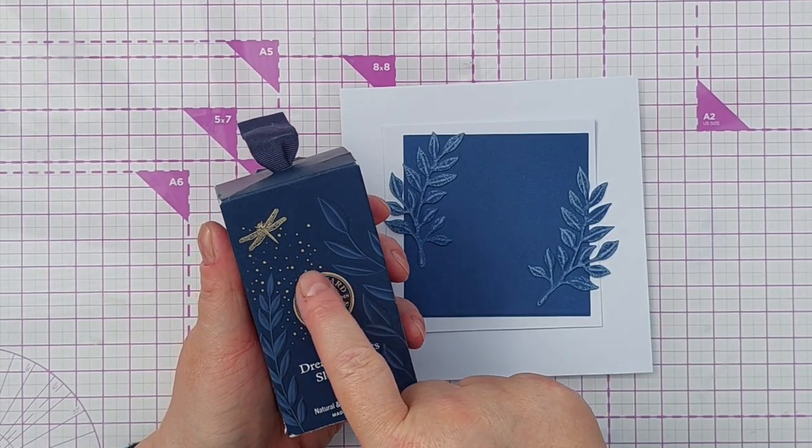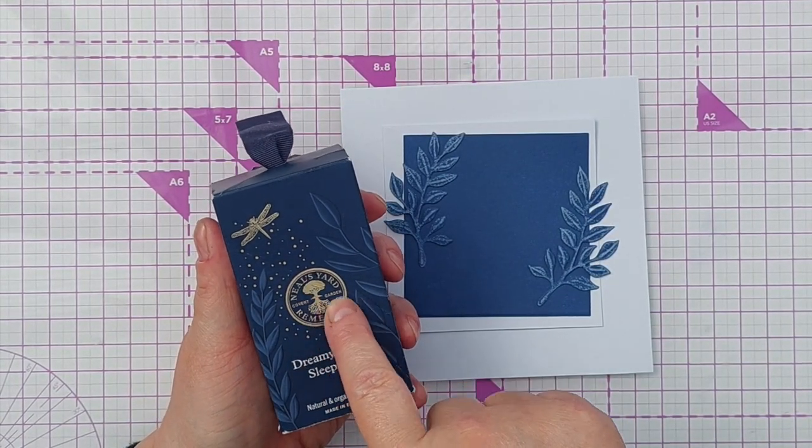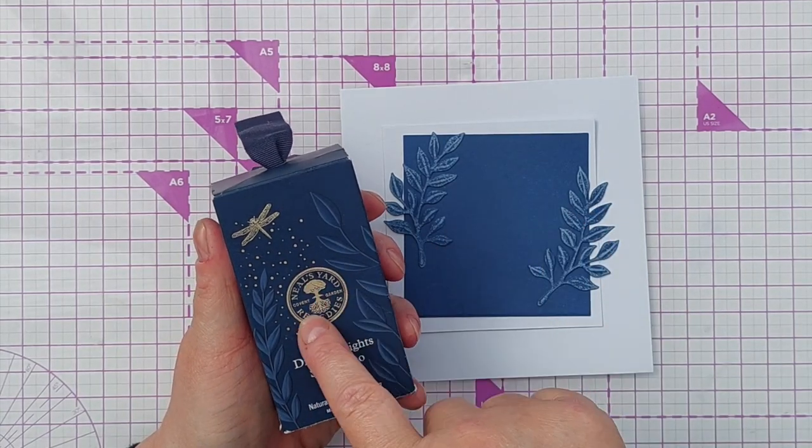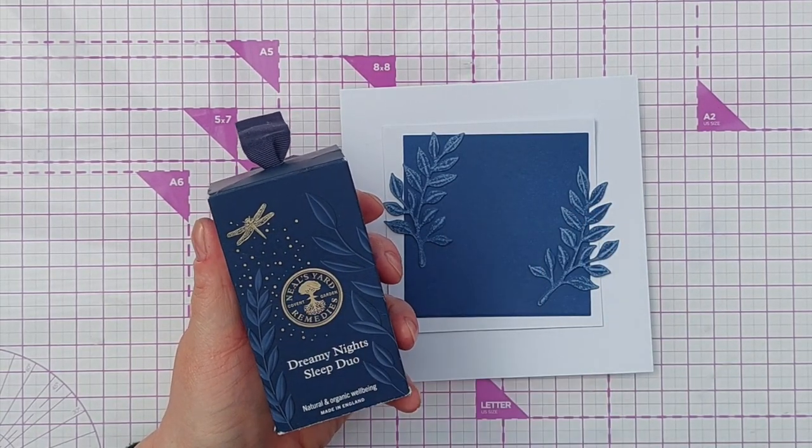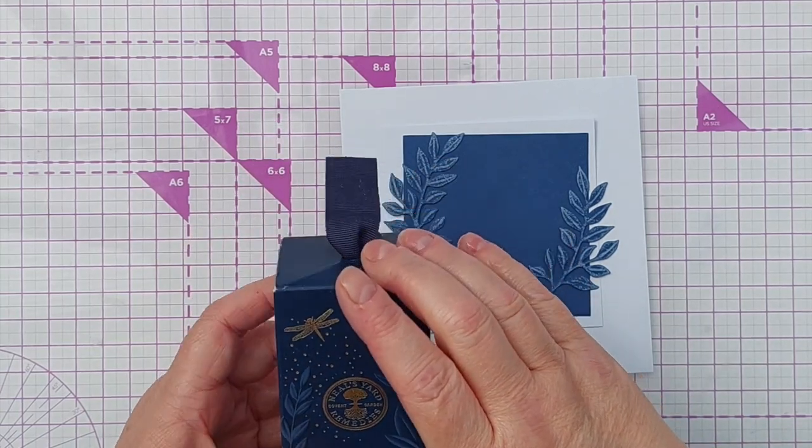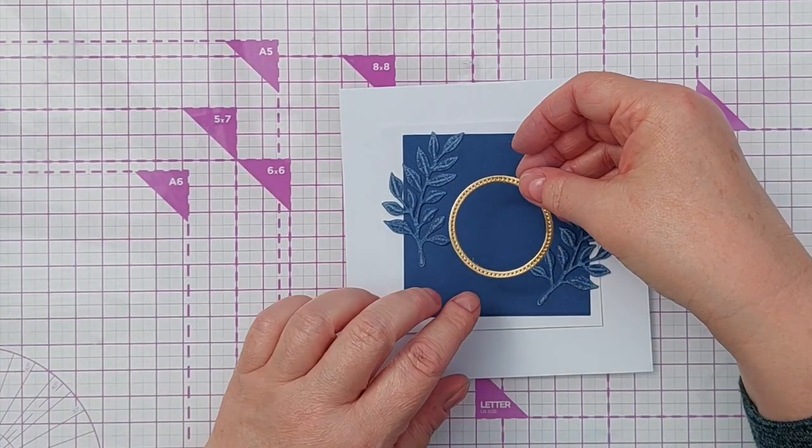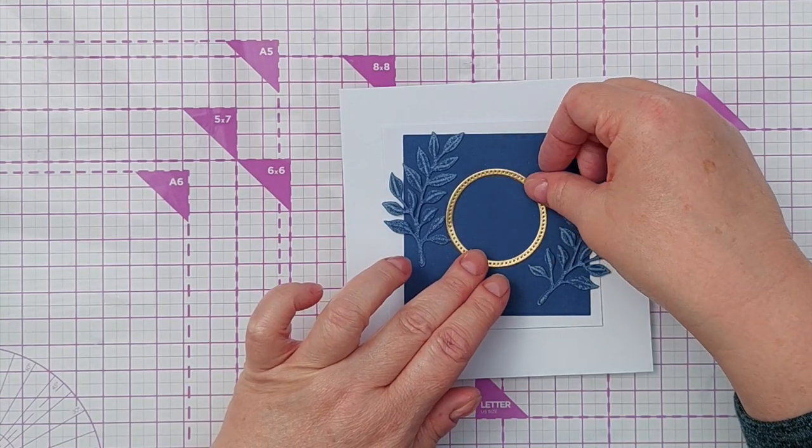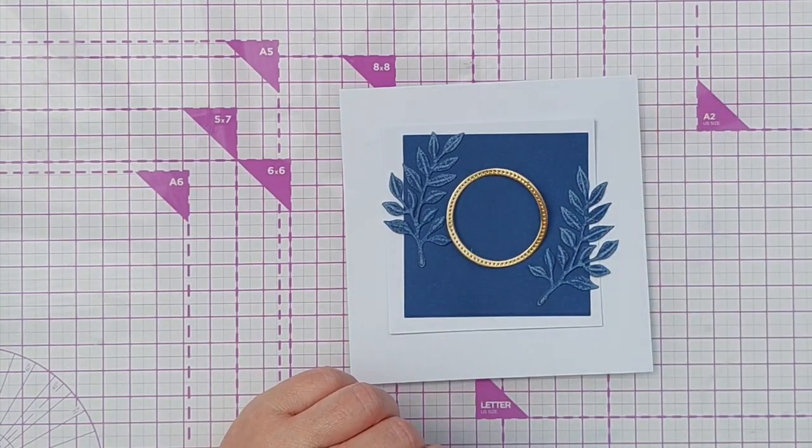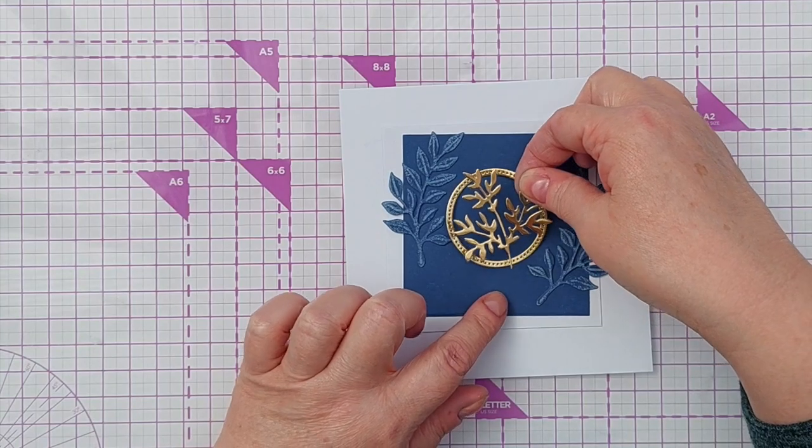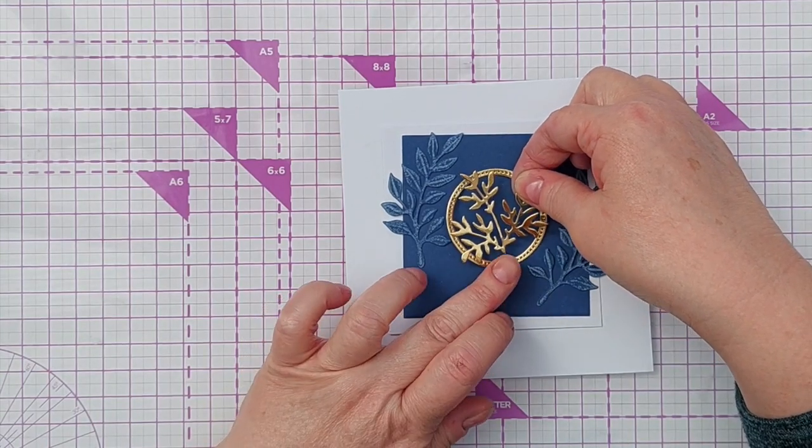Now this has got this beautiful, I suppose it's meant to look like a wax seal design on here in gold and it's just so pretty. So what I've done is, I haven't got a die like that. I've cut a gold frame out of gold mirror card and I've got this twiggy branchy thing which can sit on top of the gold frame.